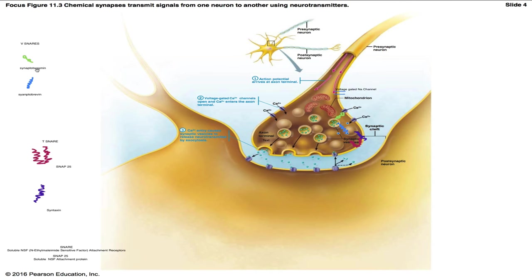The four proteins are synaptotagamin and synaptobrevin, which are embedded in the vesicle — these are referred to as V-SNAREs. Then we have SNAP25 and syntaxin, which are part of the presynaptic membrane — these are the T-SNAREs, where T stands for target. SNAP25 stands for soluble NSF attachment protein 25.